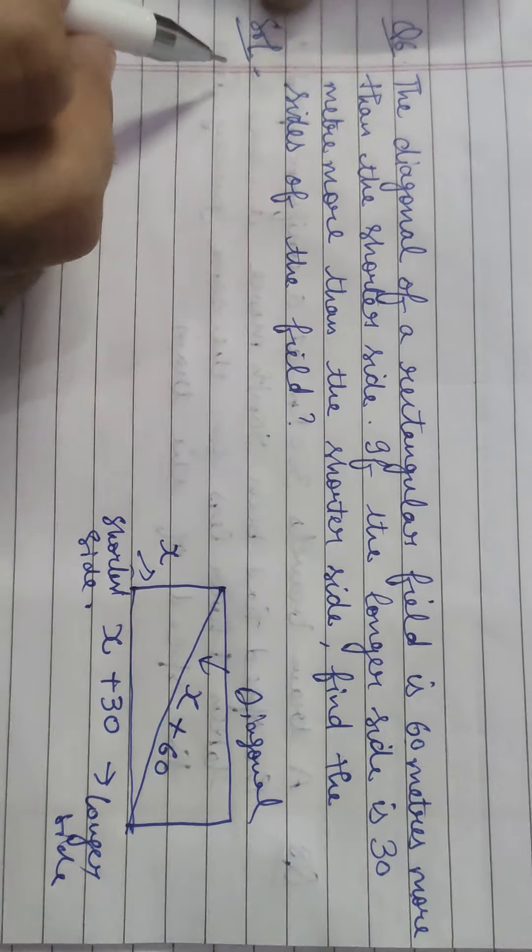Cross-multiplying X and (X + 5): we get 360(X + 5) − 360X = X(X + 5), which simplifies to 1800 = X² + 5X, giving the quadratic equation X² + 5X − 1800 = 0. Solve this to find X, the speed of the train. Thank you.